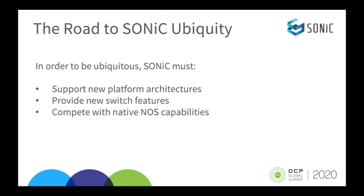Our goal at Juniper is to make Sonic ubiquitous. We want Sonic to be everywhere — in the data center, in the WAN core. To do this, Sonic must support new platform architectures like a modular chassis. It must provide new switch features like MPLS and MACsec.